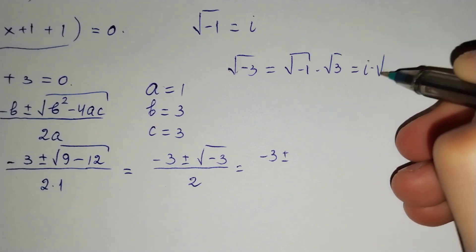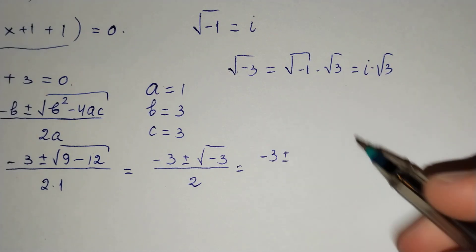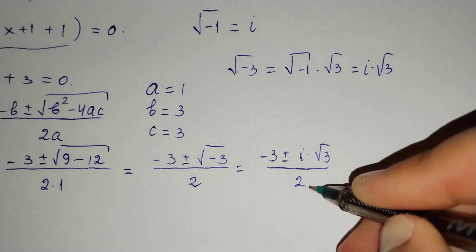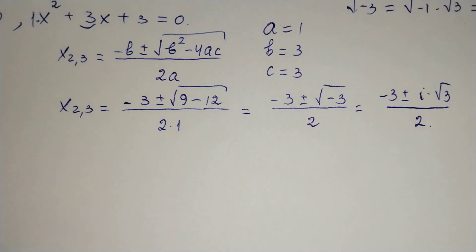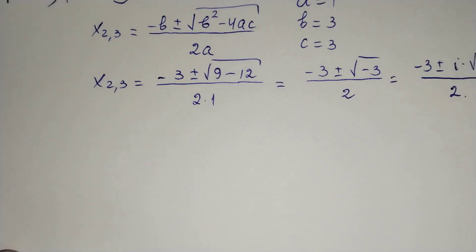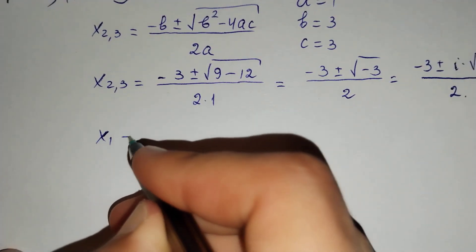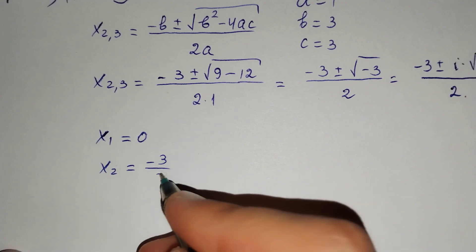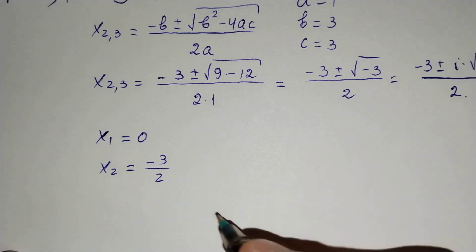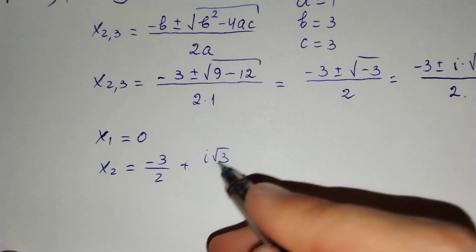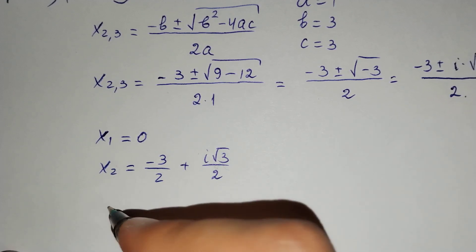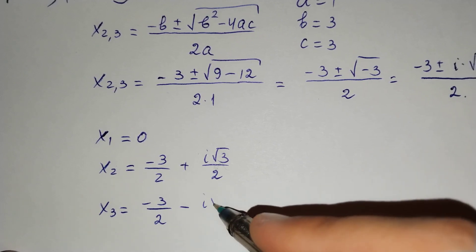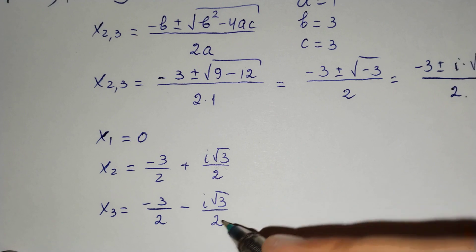The square root of minus 3 equals i times square root of 3. So our final answers are: x₁ equals 0, x₂ equals minus 3 over 2 plus i·√3 over 2, and x₃ equals minus 3 over 2 minus i·√3 over 2.